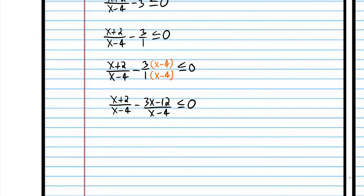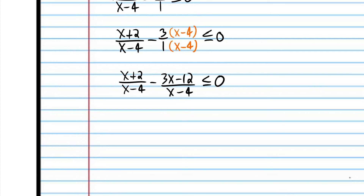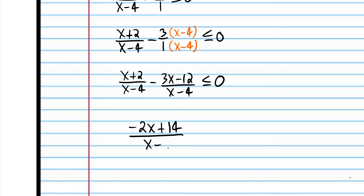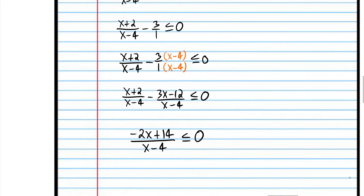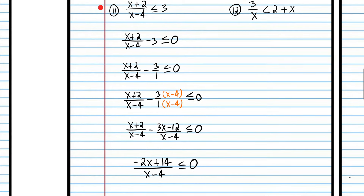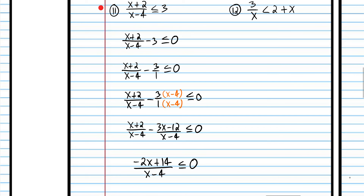That problem was quite different from the previous ones because we had to do a lot of algebra to combine everything into one fraction. Step one: put everything on one side. Step two: combine everything into one fraction. It might be beneficial to factor out a negative two to make it easier to see where the zero is. Now we're ready to make a sign chart. It says less than or equal to, so we have these two numbers. Plugging in eight: negative two times one divided by four — obviously negative. Plug in five: negative two times negative two over one — that's positive. Plug in zero: negative two times negative seven divided by negative four, which is 14 over negative four — negative.